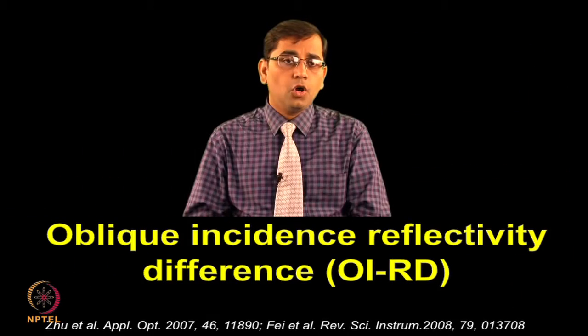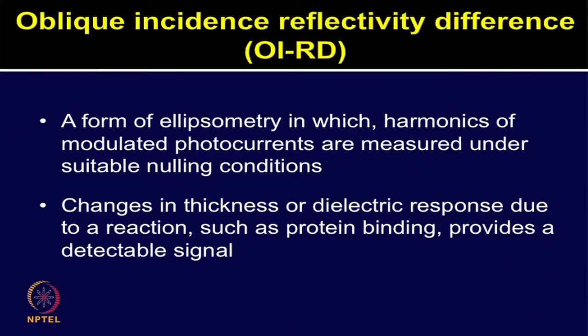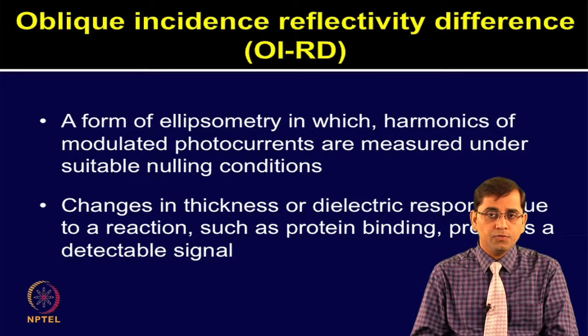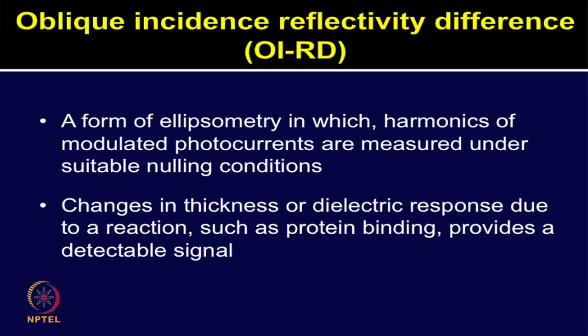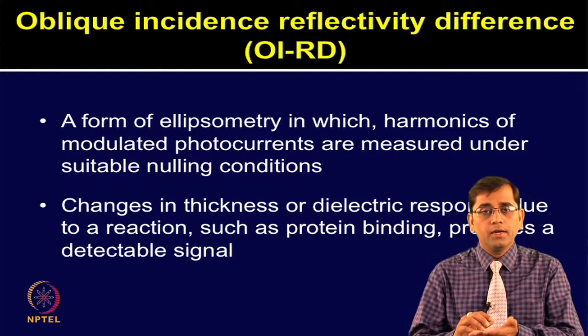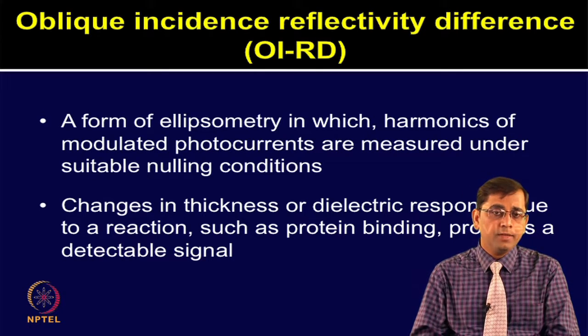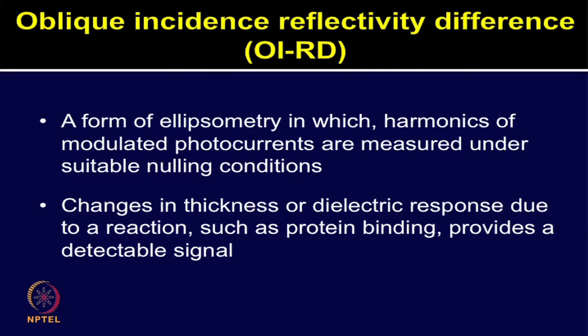Let us talk about oblique incidence reflectivity difference, or OIRD. OIRD is a form of polarization-modulated imaging ellipsometer, in which the harmonics of modulated photocurrents are measured under suitable conditions. It can be used for label-free, high-throughput detection of biomolecular interactions on DNA as well as protein microarrays. Changes in thickness or dielectric response due to a reaction such as protein binding provide a detectable signal, allowing reactions to be monitored.